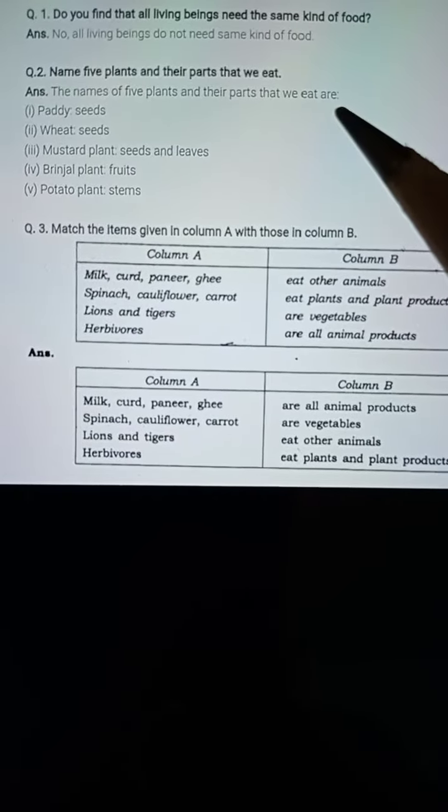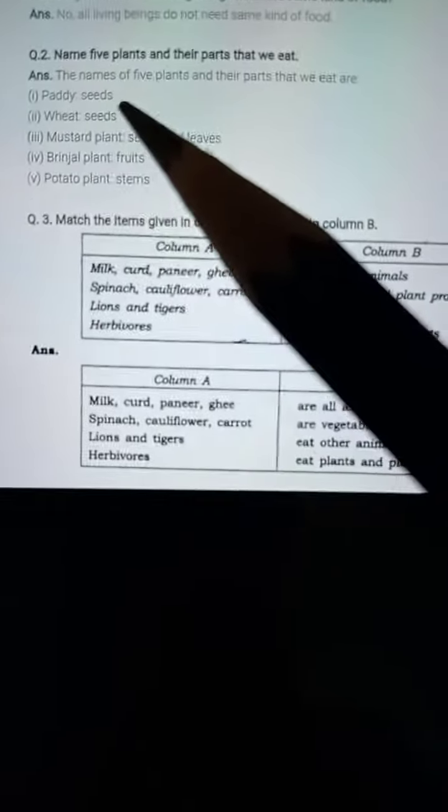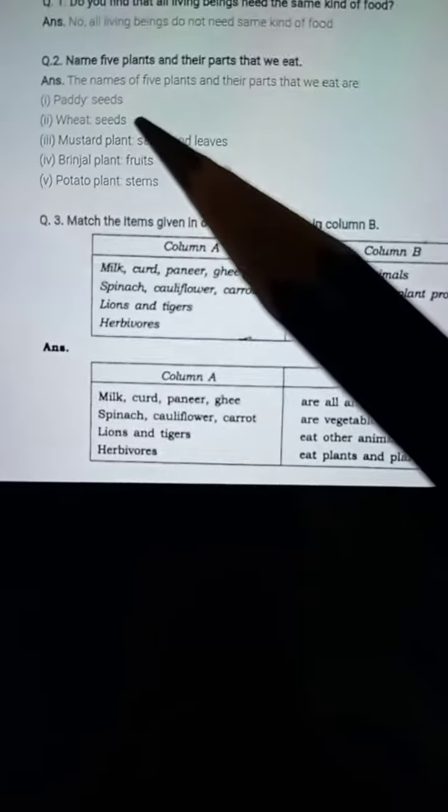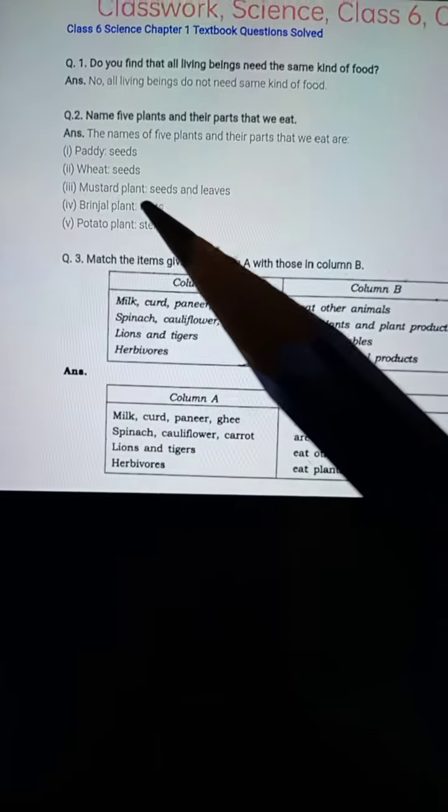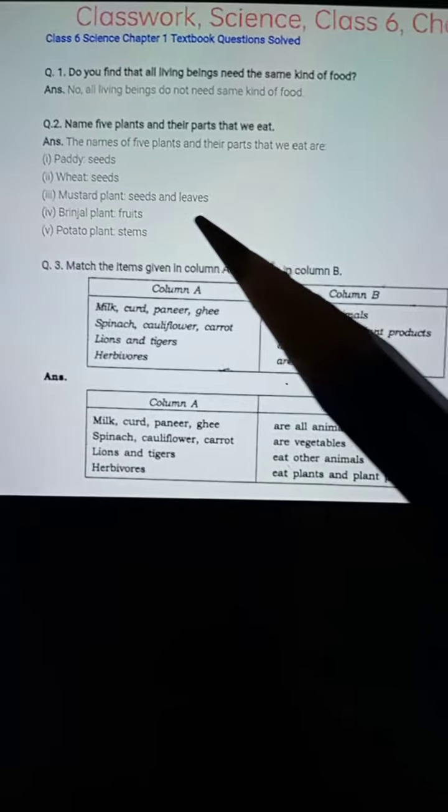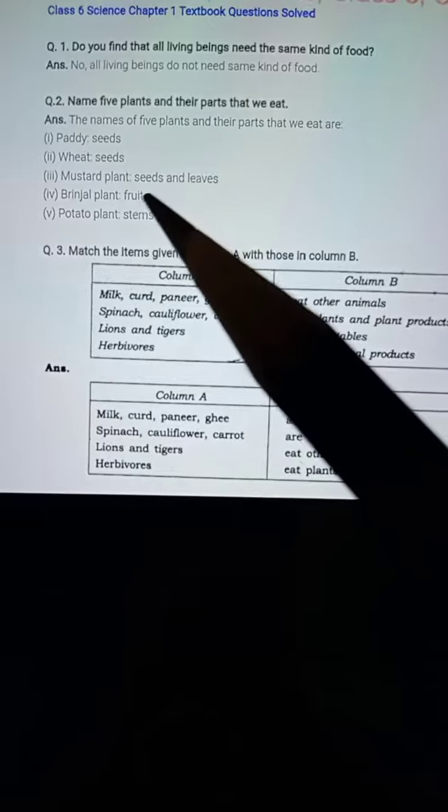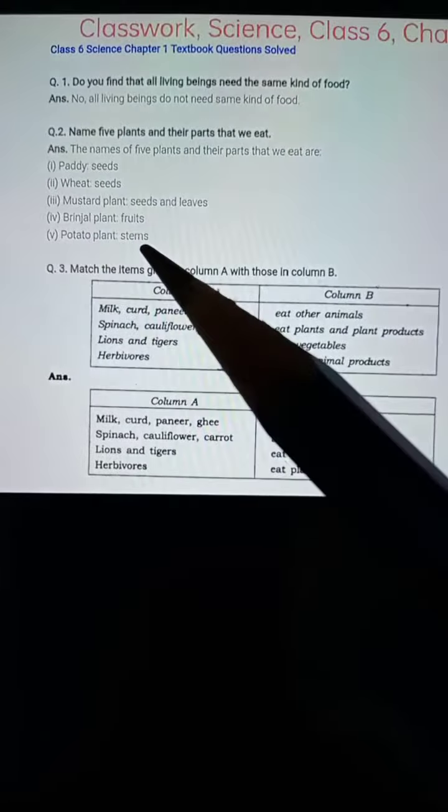The names of five plants and their parts that we eat are: number one, paddy seeds; number two, wheat seeds; number three, mustard plant seeds and leaves; number four, brinjal plant fruits; number five, potato plant stems.